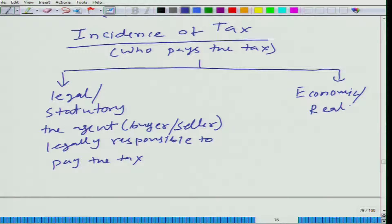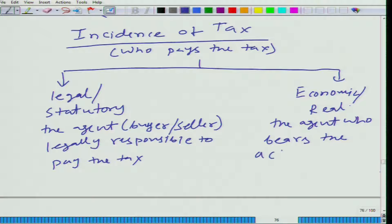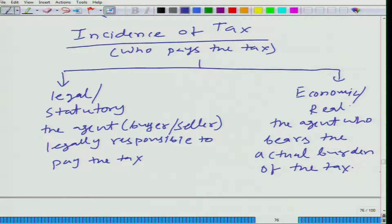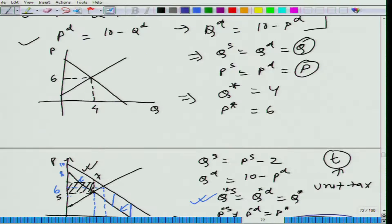What happens in the economic sense? The economic sense refers to the agent who bears the actual burden of the tax, and these two are different. Just as we saw in this particular case, whether the tax is imposed on the buyer or on the seller, the tax would be shared by both of them.